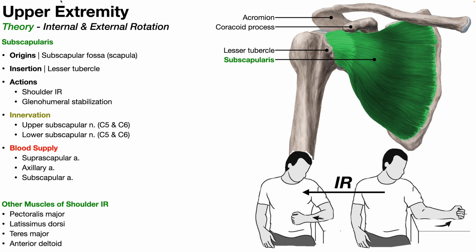In the previous video, we discussed some of the muscles of shoulder abduction — the deltoid muscle and the supraspinatus. In this video, we're going to talk about the internal and external rotators of the shoulder. We're going to begin by talking about the internal rotators, especially the subscapularis muscle.